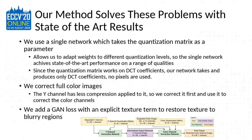Our method solves these problems while still achieving state-of-the-art results. We use a single network structure that takes the quantization matrix as a parameter. This means we can adapt our weights to different quantization levels, so a single network can achieve good performance on a wide range of qualities. And importantly, while the quality integer is not stored with the JPEG file, the 8x8 quantization matrix is — so this solves the problem of missing information at inference time.